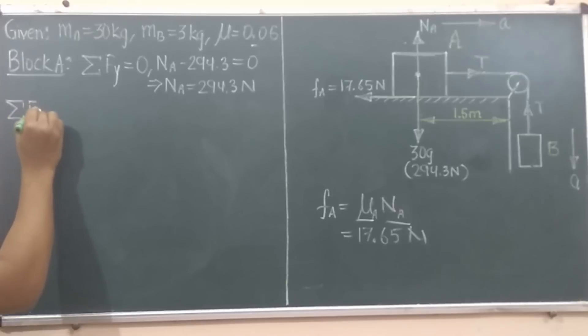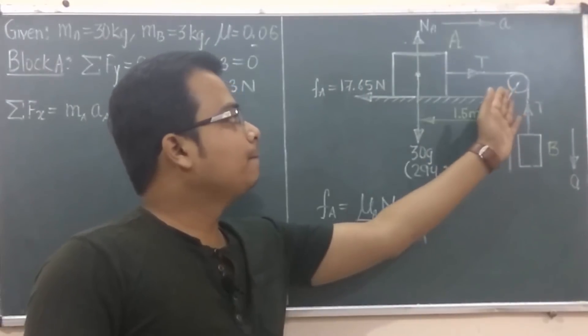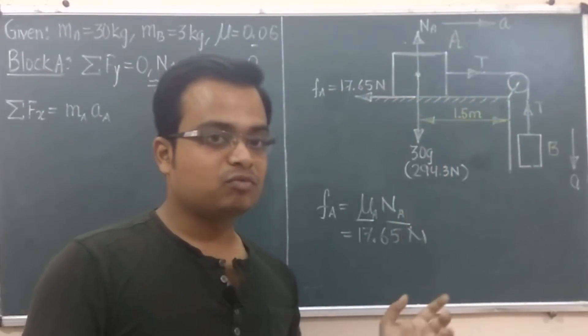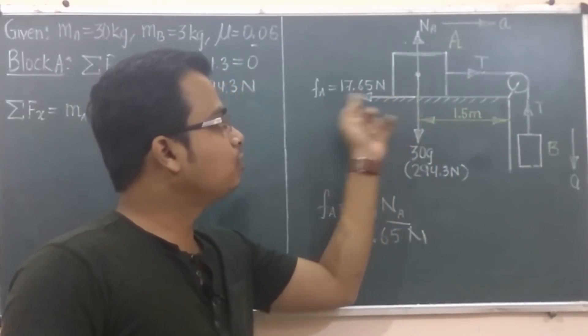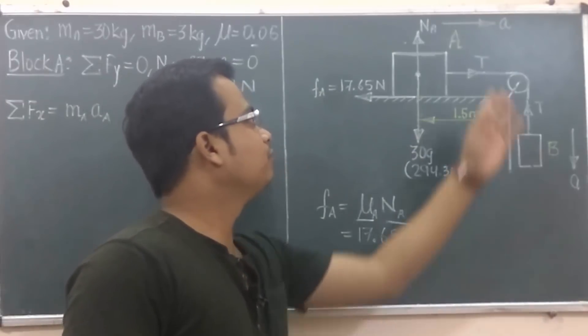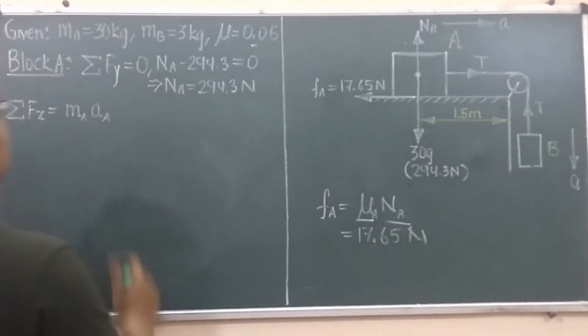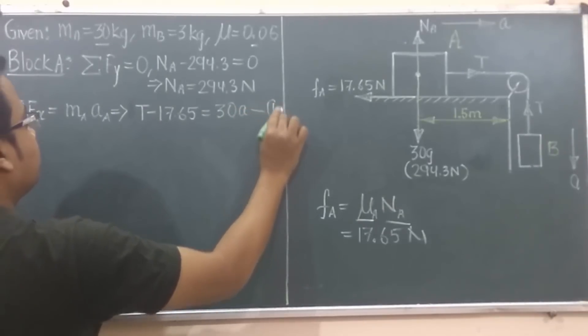Now let us go ahead and apply summation of all the forces in x direction equals product of mass and acceleration for block A. This is the x direction, this is the direction of motion. Which force is along the direction of motion? It's this tension T. So this will be taken as positive and this frictional force will be taken in the negative sense. So we have T minus 17.65 equals product of mass and acceleration, block A mass is 30, so 30 times a. Let's just say this is our equation number one.